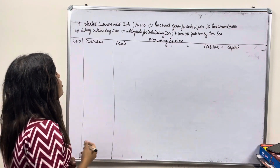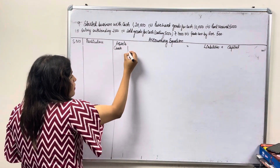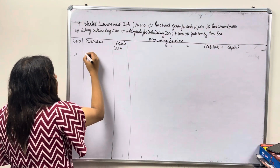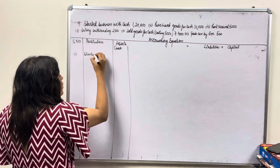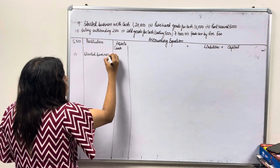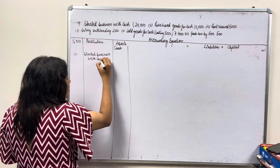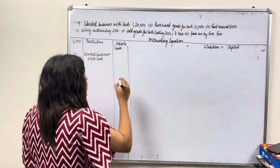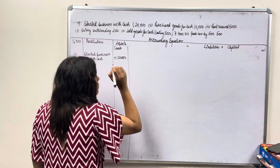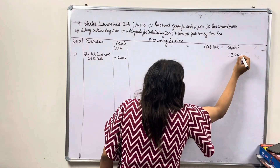First transaction on the asset side: 'Started business with cash.' The value is 1,20,000. We add 1,20,000 to cash and 1,20,000 to capital.